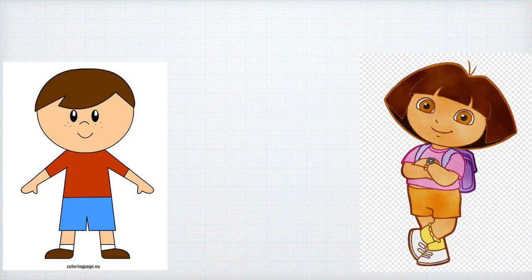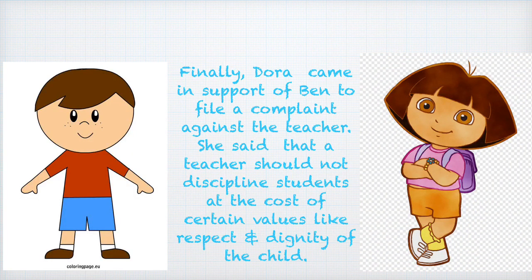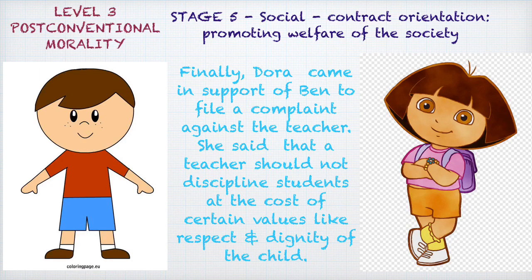Finally, Dora comes in and tells Ben that he should file a complaint against the teacher with the principal. She says that a teacher should not discipline students at the cost of certain values like respect and dignity of the child. Dora's response is characteristic of Stage 5, the social contract orientation, within Level 3 or post-conventional morality. Here, morality is guided by the awareness that rules and laws are for the welfare of society, and that rules are flexible and can be changed for the larger common good.